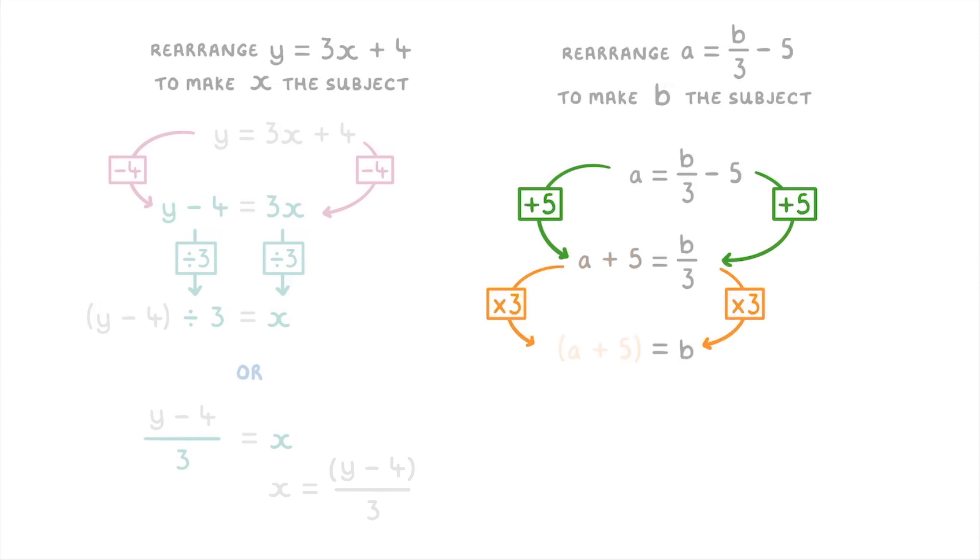So you can put the a plus 5 in a bracket and multiply the whole thing by 3, which you can then expand to 3a plus 15 equals b. And lastly we just swap it around to get b equals 3a plus 15.